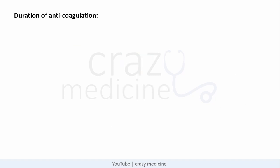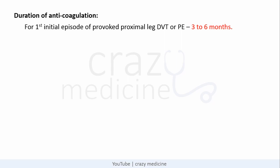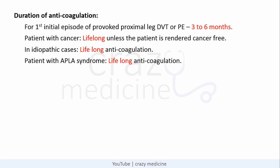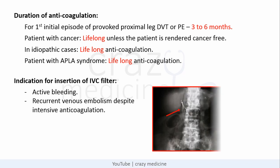Important MCQ points are the duration of anticoagulation in different conditions. For the first initial episode of provoked proximal leg DVT or pulmonary embolism, anticoagulation is given for 3–6 months. For patients with cancer, lifelong anticoagulation is given unless the patient is rendered cancer-free. In idiopathic cases and with APLA syndrome, lifelong anticoagulation is given. Indication for insertion of an IVC filter: active bleeding or recurrent venous embolism despite intensive anticoagulation.